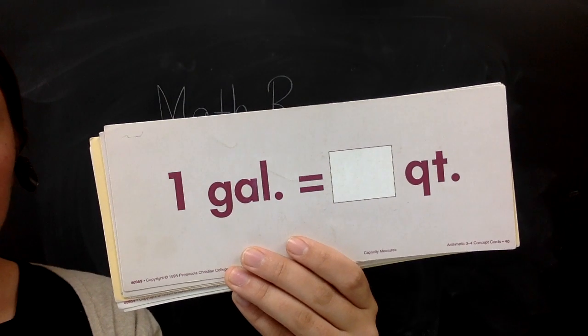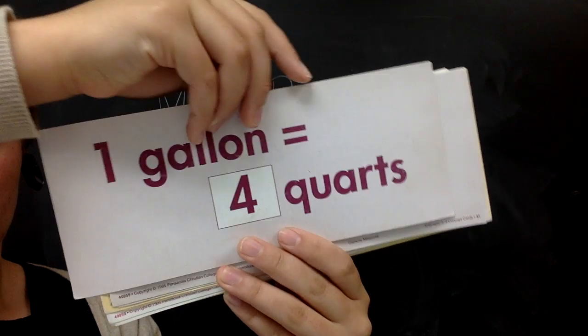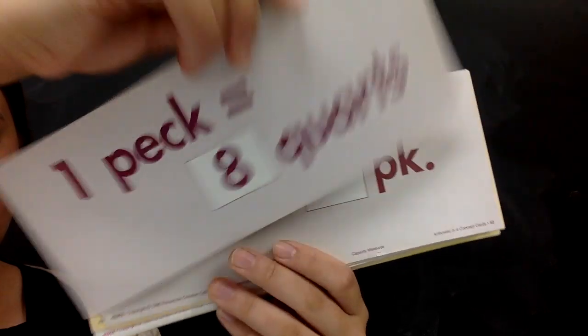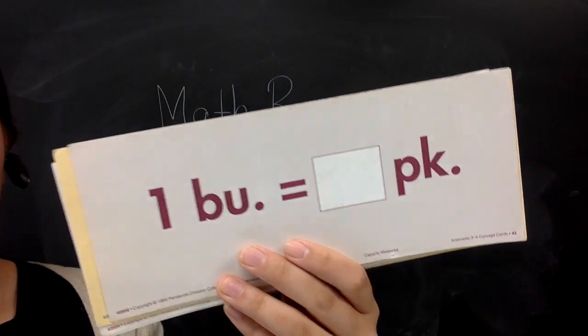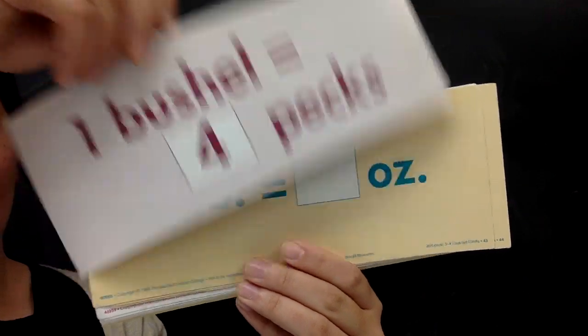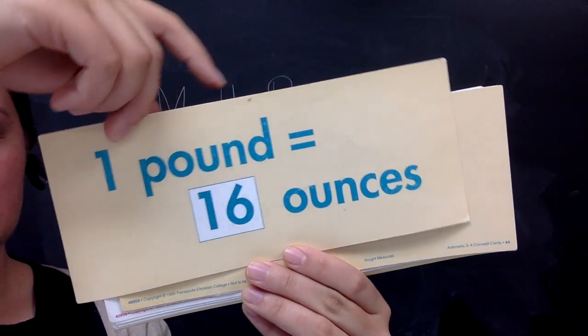One quart equals how many pints? 2. One gallon equals how many quarts? 4. One peck equals how many quarts? 8. One bushel equals how many pecks? 4. One pound equals how many ounces? 16.